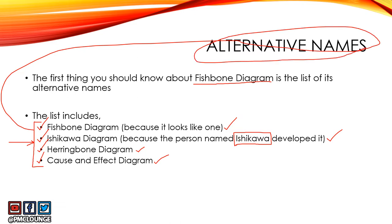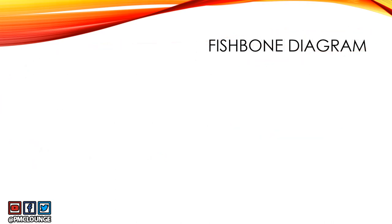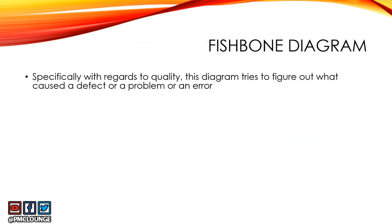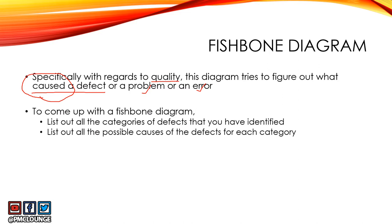So what is the fishbone diagram? Specifically in quality in project management, this diagram tries to figure out what caused a defect, problem, or error. If there is a problem, what is the root cause? That is exactly what the fishbone diagram aims at achieving.